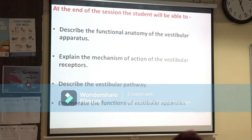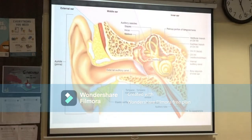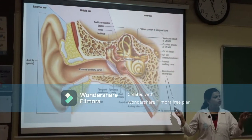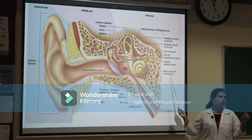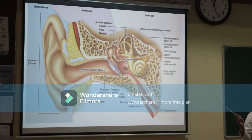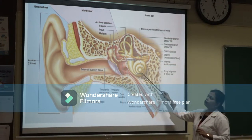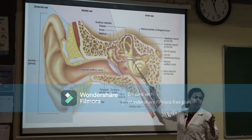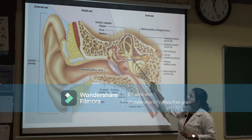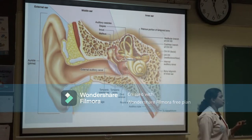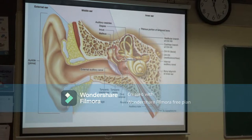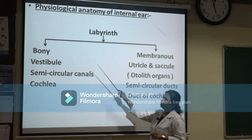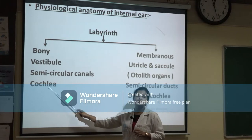We will start with the functional anatomy of the vestibular apparatus. It is located in the petrous part of the temporal bone. The bony part consists of three semicircular canals, one vestibule, and a cochlea. The vestibular apparatus is made up of a bony labyrinth and a membranous labyrinth. The bony labyrinth includes the vestibule, semicircular canals, and cochlea.